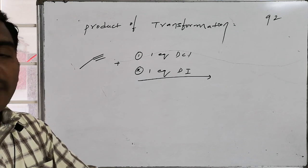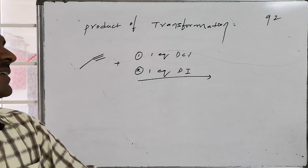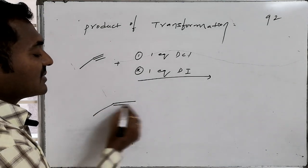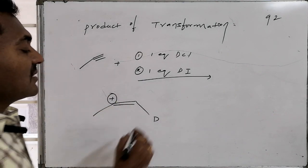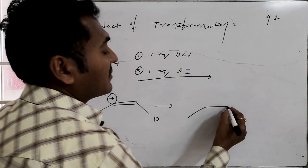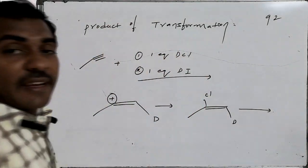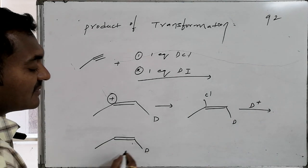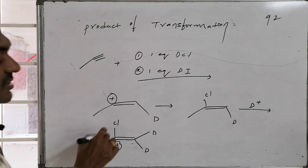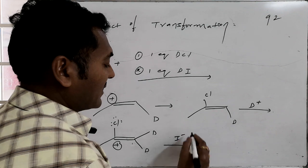The next question asks for the final product when 1-propyne is treated with one equivalent of DCl followed by one equivalent of DI. When one equivalent of DCl is added, the triple bond converts to a double bond, generating the relatively more stabilized carbocation via Markovnikov's rule. Chlorine then attacks that cation to give a vinyl chloride intermediate. On this system, chlorine's lone pairs can conjugate with the unsaturation, stabilizing it.